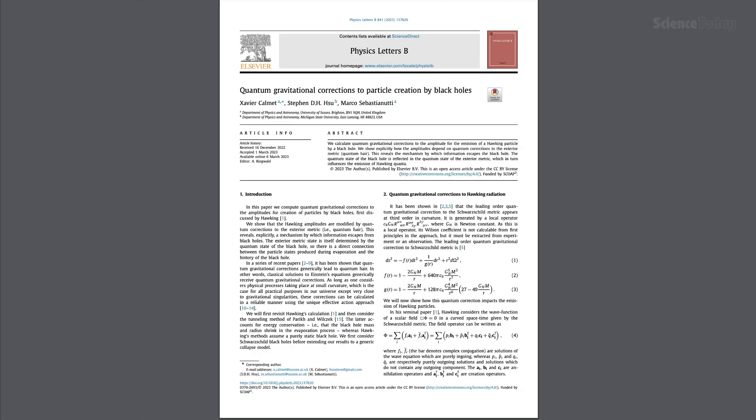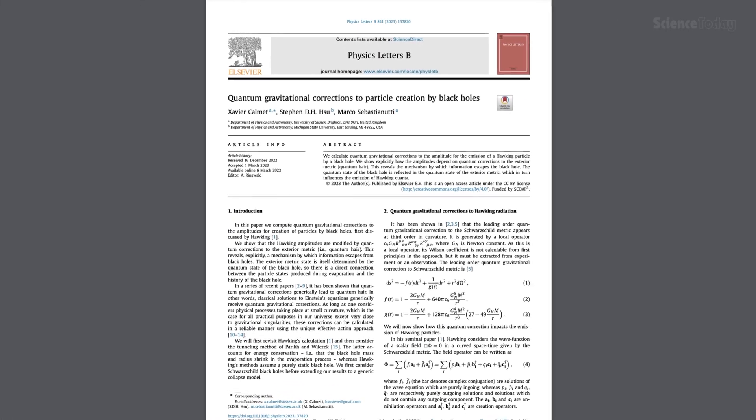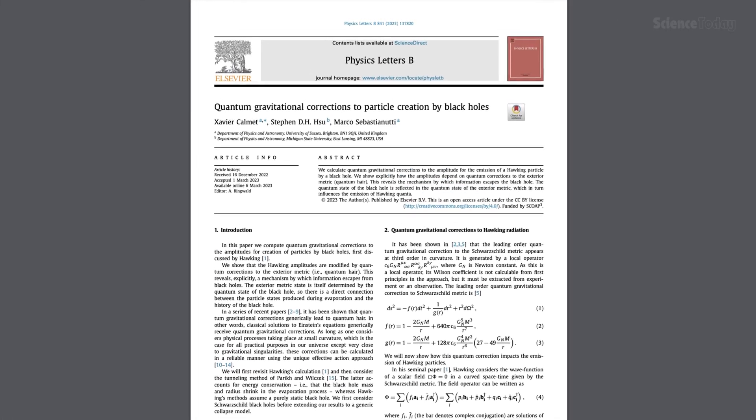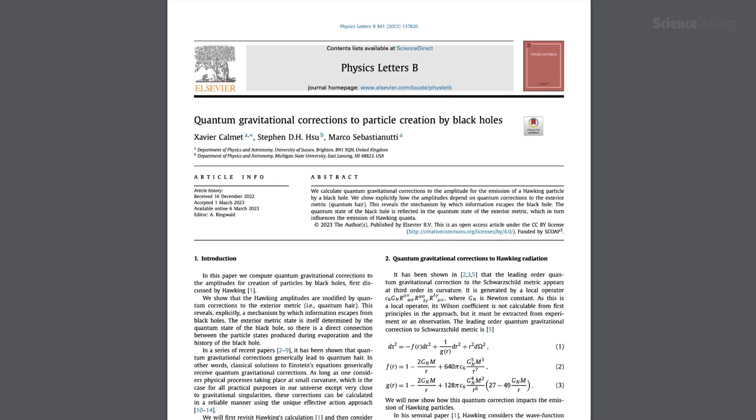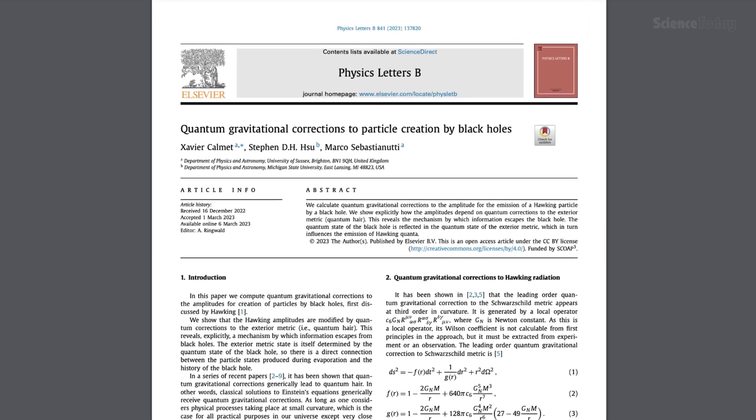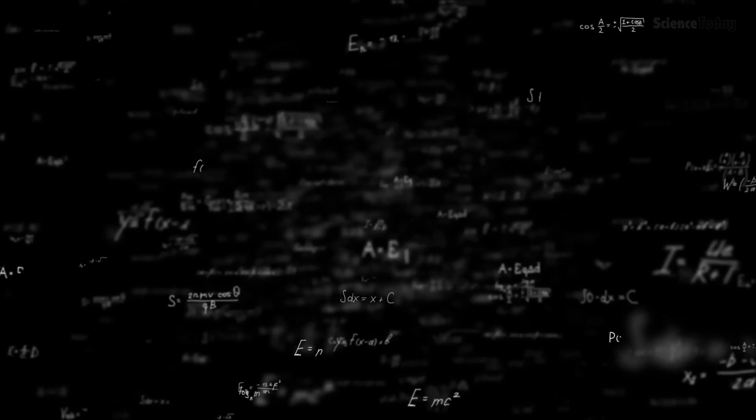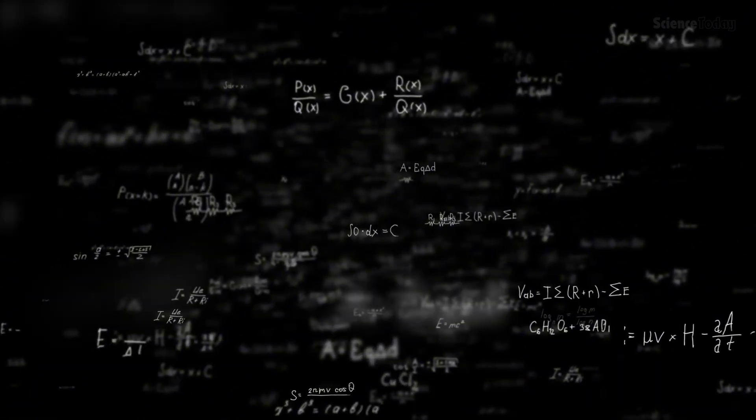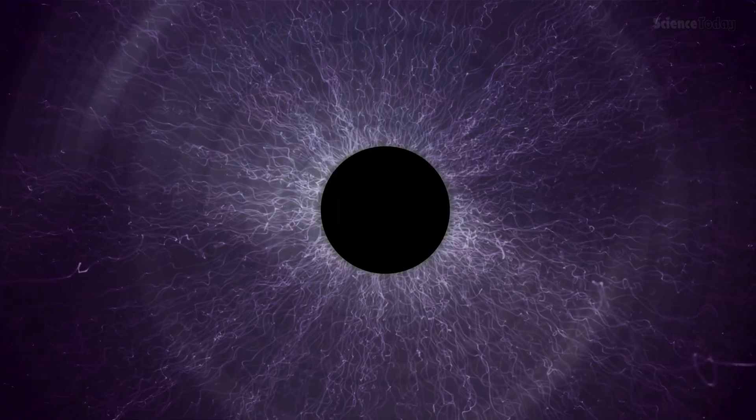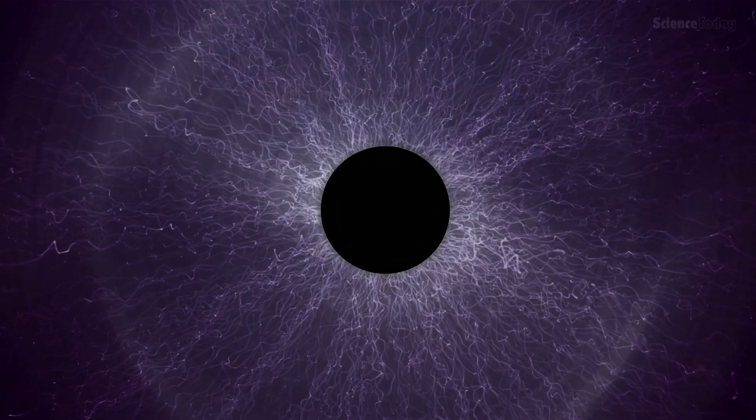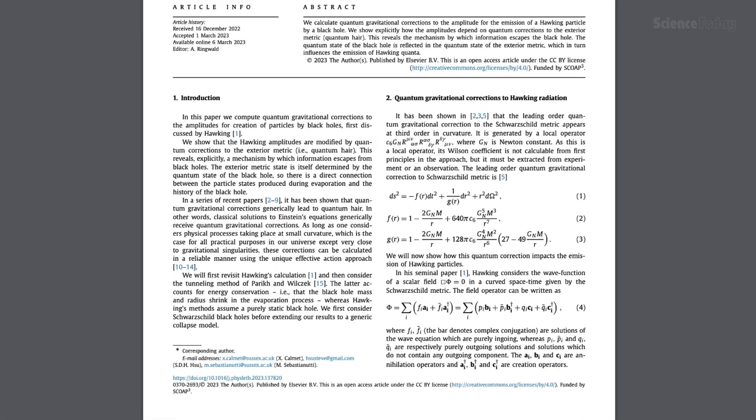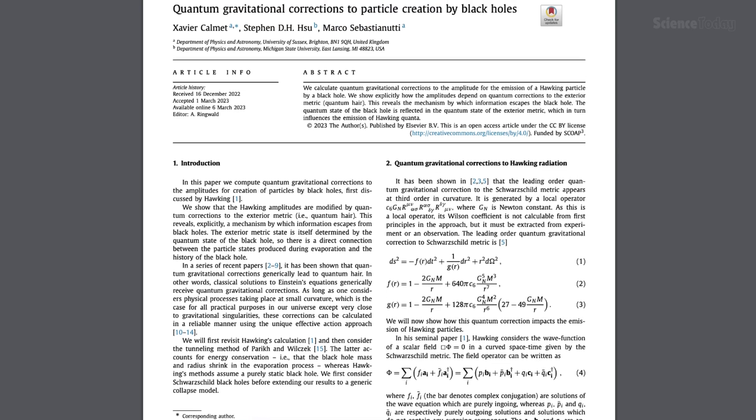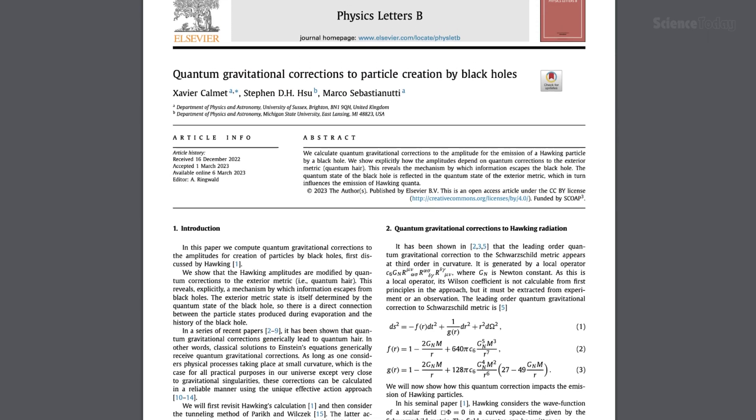Recently, some researchers proposed that when quantum gravitational effects are factored into Hawking's equations, the radiation might actually carry the lost information. This perspective suggests that the equations we've relied on for decades might need rethinking. It's a bold claim, but not yet conclusive. This remains an active area of study, pushing the boundaries of both physics and mathematics.